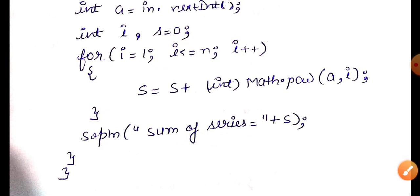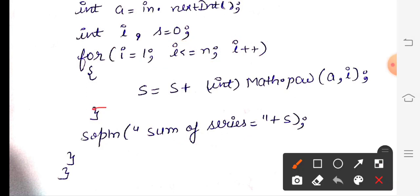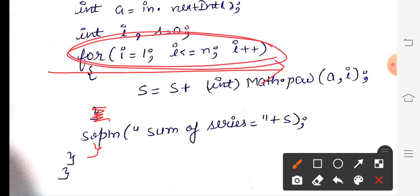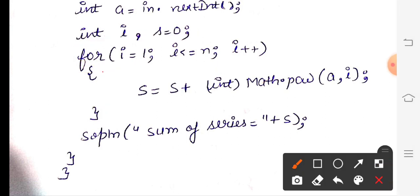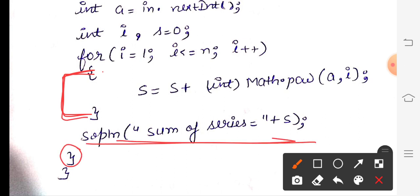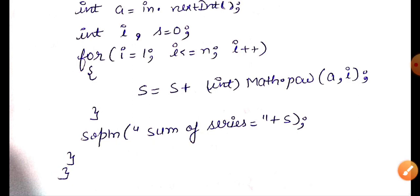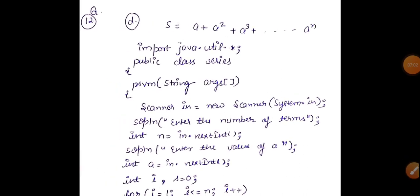Remember one common mistake students make — they do not close the for loop before printing. When the question asks for the sum of a series, you should not print the sum until all terms are completed. The sum should be printed only after the for loop finishes running. So close the for loop first, then print the sum. Then close main and class. That completes question 12, part D.